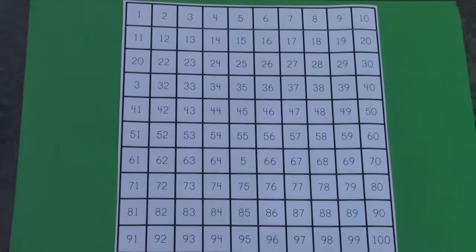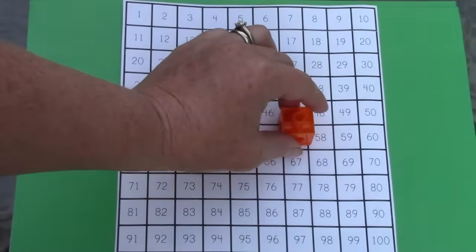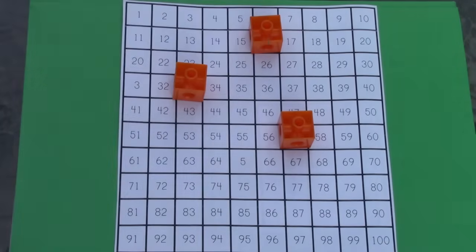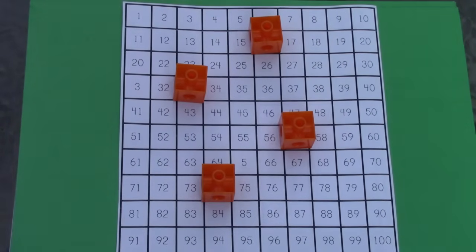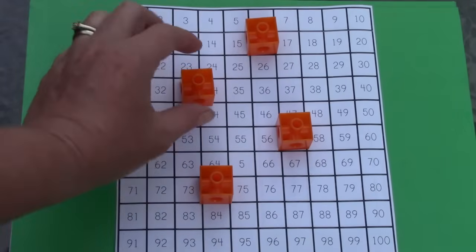If you have one at home, you could play a game like this. You could take some blocks or snap cubes or little pieces of Lego and you could cover some of the numbers on your 100s chart. And then you could see if a friend can figure out which number you have covered.